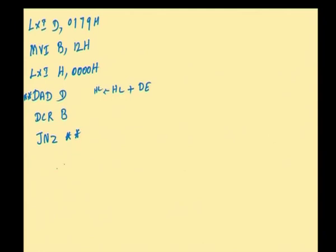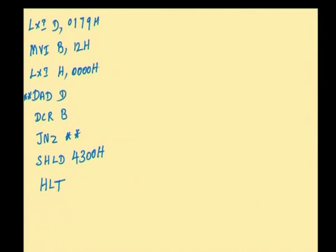Once B reaches 0, the result is in the HL register pair. With the help of the SHLD instruction, you can store the result at 4300H, then stop the program. This is the concept of 16-bit by 8-bit multiplication.